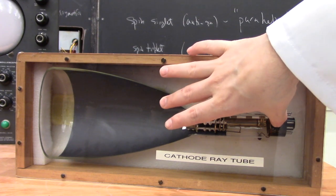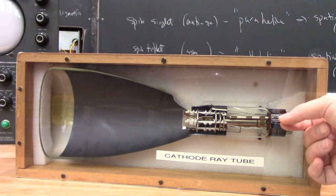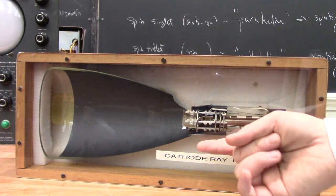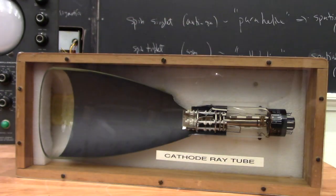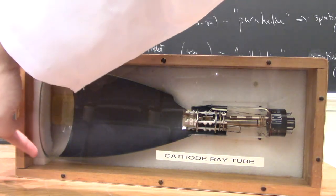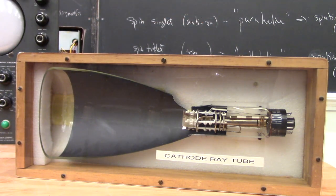The tube itself is a vacuum. A beam of electrons is fired down the tube. Those electrons can be deflected by the electromagnetic coils here, so the beam can be forced up, down, left, right, or any combination. When the electrons themselves hit the phosphorescent screen at the far end, those points begin to glow, creating an image.